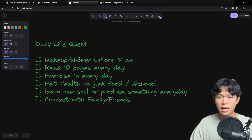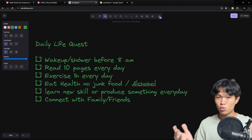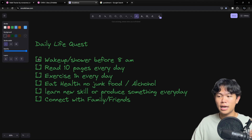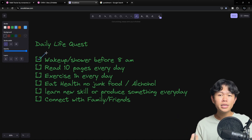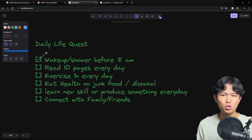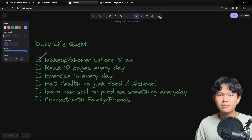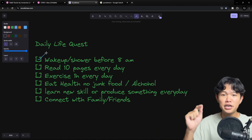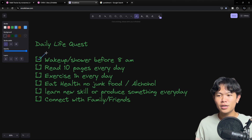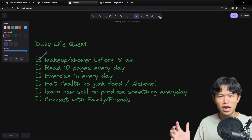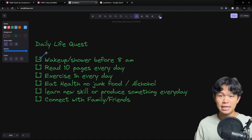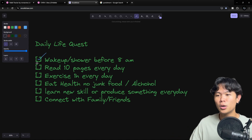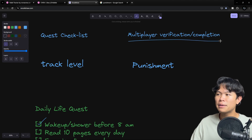Each of these quests — I myself cannot mark them as complete. The reason I made this feature is because I don't want the user to abuse it. Someday they are not doing it, but they could just go into the application and mark it as complete — that's not good. So I want it to be hard to complete. We need other people to verify that I am actually doing the quest. That's why we introduced multiplayer verification.